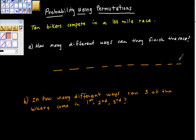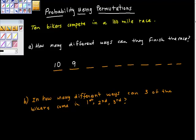How many of them have a chance of winning first place? Well, ten of them. But once one of them finishes first, how many riders are left? Nine. And once the first two riders have finished, how many riders could come in third place? Eight, seven, six...